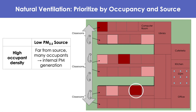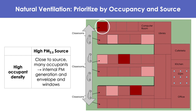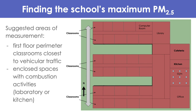If a naturally ventilated school wants to determine internal PM generation and human contribution, measure rooms with high occupancy. To avoid diluting the measurement with nearby sources, pick a densely occupied room far from ambient sources. Lastly, the high occupant density and high PM 2.5 source combination helps determine the extent to which internal PM generation and building envelope contribute. This is likely a classroom with the highest PM 2.5 concentration since PM comes from concurrent sources, flooring, cleaning activities, and humans. Other suggested areas for maximum PM 2.5 include a first-floor perimeter classroom near vehicular traffic, or labs with Bunsen burners or kitchens with stoves.